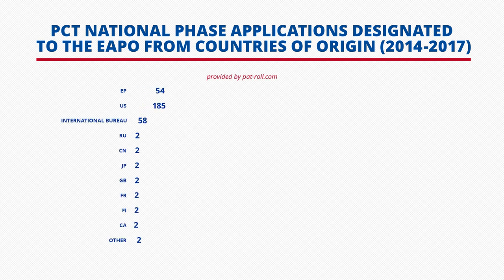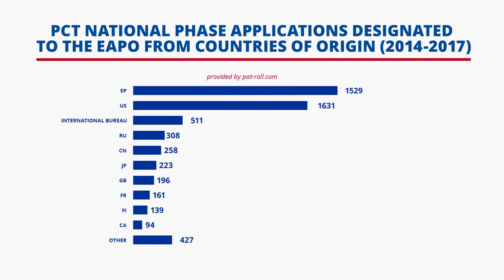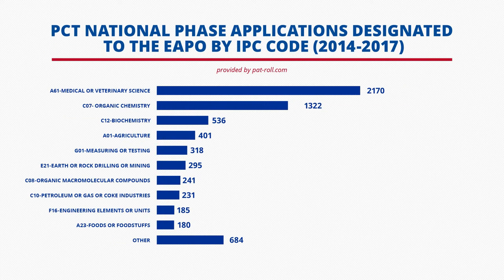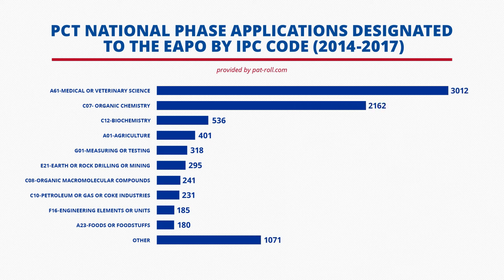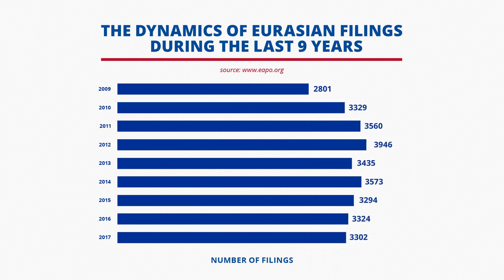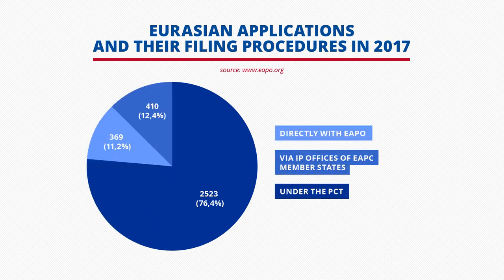This slide shows the number of PCT national phases designated to the EAPO from countries of origin in the period of 2014 to 2017. The highest number of applications were filed in such industries as medicines, organic chemistry, biochemistry, and agriculture — industries prevalent in targeting Eurasian markets. This slide demonstrates the dynamics of applications filed to the EAPO over nine years. It should be noted that 76.4% of EAPO applications are filed through the PCT procedure.